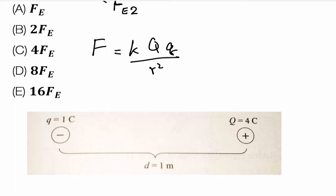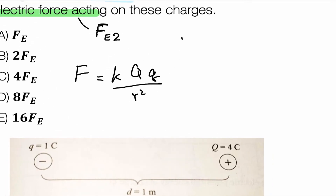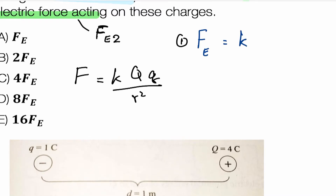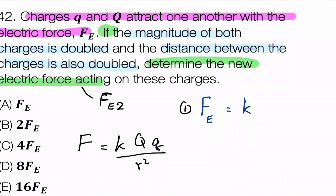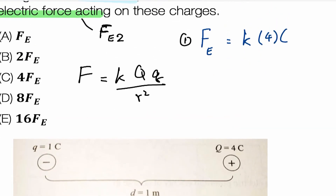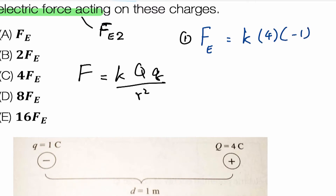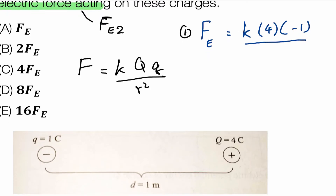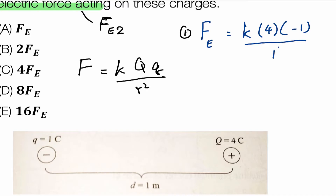So in this case, Fe is the original force. Fe will be equal to K times Q times Q over R squared. We don't need to substitute numbers. Let K and Q equal values: if Q equals 1 and R equals 1, the force will equal 4K, giving a base result.